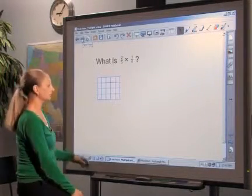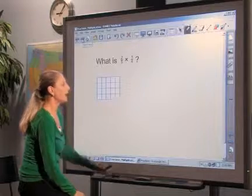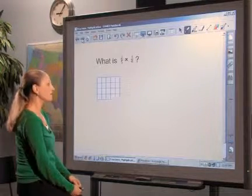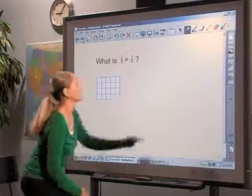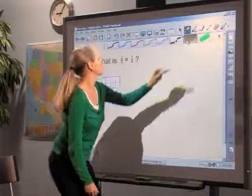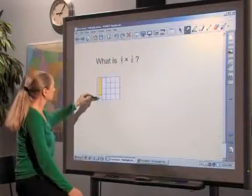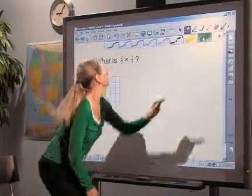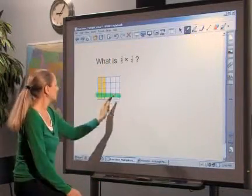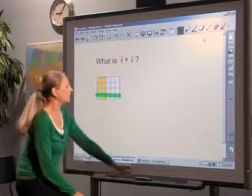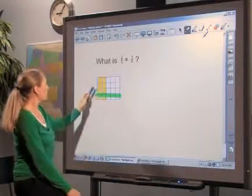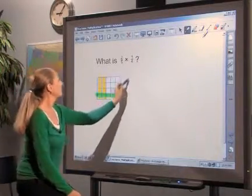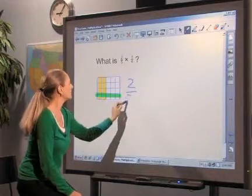Students can color in the fractions. Here, 2/5 and 1/4, and then find the overlapping sections. 2/5 times 1/4 is 2/20.